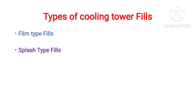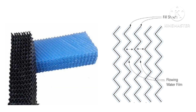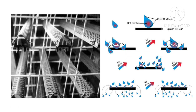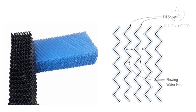There are mainly two types of fills used in cooling towers. First is film type and second is splash type. Now we'll see the image of both. This is the image of film type fills used in a cooling tower, and this is the image of splash type fills used in a cooling tower.